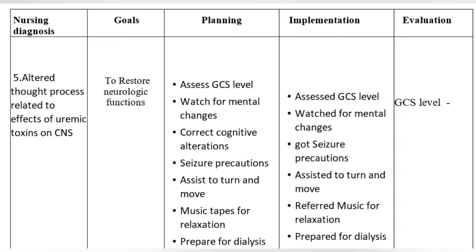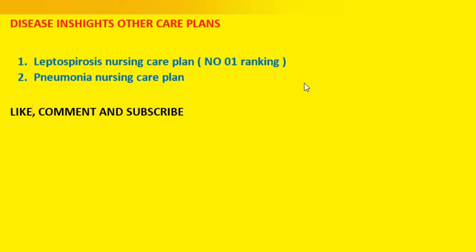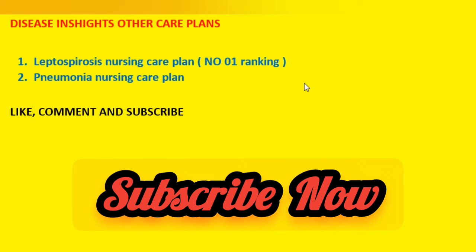Nursing Diagnosis 5: Altered thought process related to effects of uremic toxins on CNS. Goal: To restore neurologic functions. Planning and Implementation: Assess GCS level, watch for mental changes, correct cognitive alterations, implement seizure precautions, assist to turn and move, use music for relaxation, prepare for dialysis. Evaluation: GCS level.